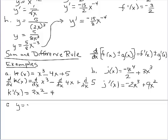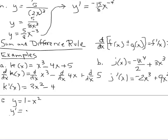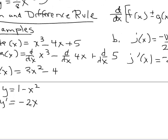Let's look at another sum and difference rule example — we found this derivative by the limit process in earlier work with the formal definition. Studying each term, they're all ready for differentiation by the power rule. Going to y prime: the derivative of the constant 1 is 0. Applying the power rule gives negative 2x. That matches the derivative we found by the limit process, confirming these differentiation rules allow us to find derivatives much more quickly than using the formal definition.